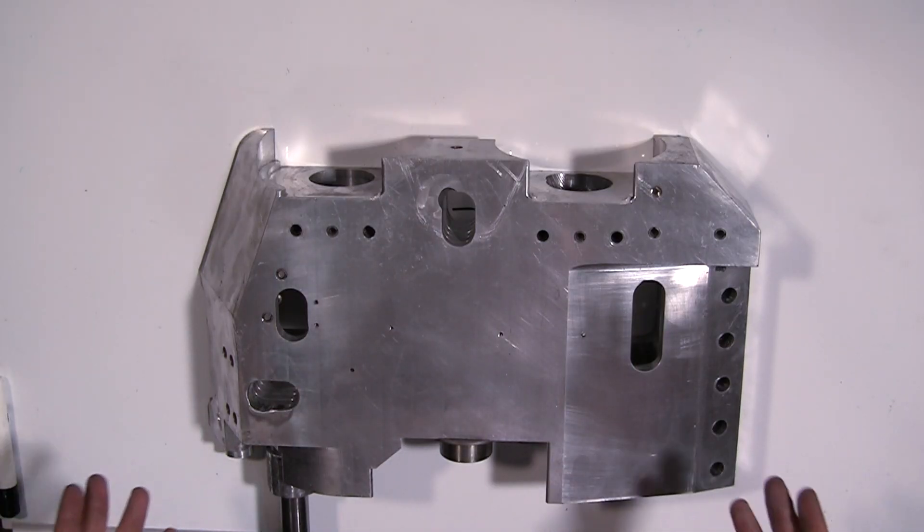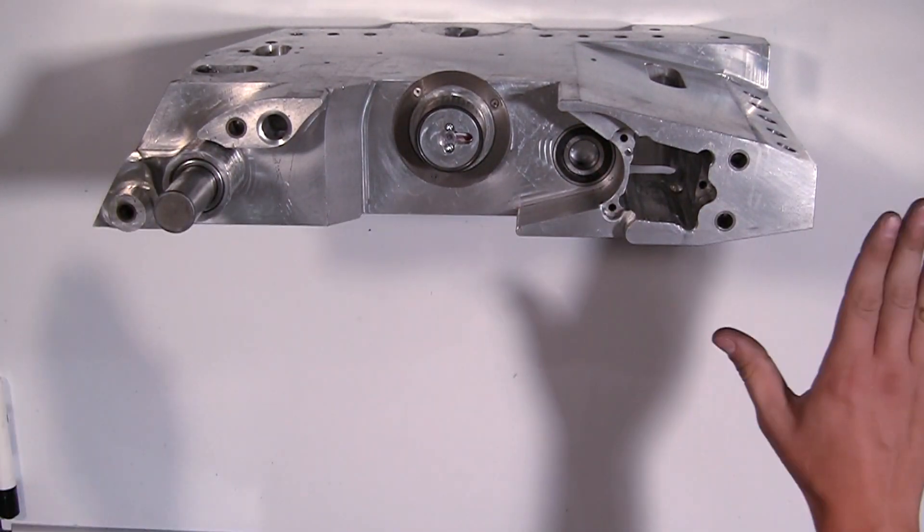So I have in front of me half of Tantrum's chassis, which is composed of two large billets of aluminum. So we're actually looking split down the middle at the central plane of the robot. So this is where all the choo-choo happens.